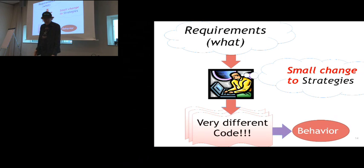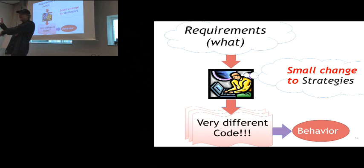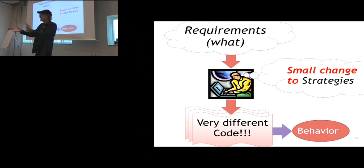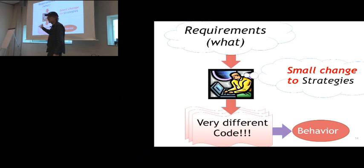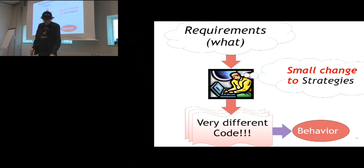The problem is that if you make a small change to the strategy — if you go back in the room and say we should have done it this way, like NoSQL with this strategy — then you have to throw out all your code. Because it's very different from what it was before, and the things that were the same are no longer the same because they're embedded in all this stuff that's different. This is what I call chaos — a small change to the input has a huge change on the output.